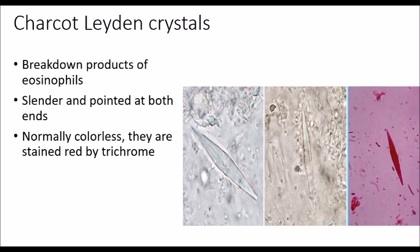Something you may see with Entamoeba histolytica when examining a stool prep is something called a Charcot-Leyden crystal. You can see these on the right — elongated, diamond-shaped crystals found in the stool. These are the breakdown products of eosinophils. They are slender and pointed at both ends, normally colorless, but they will stain red with a trichrome stain.